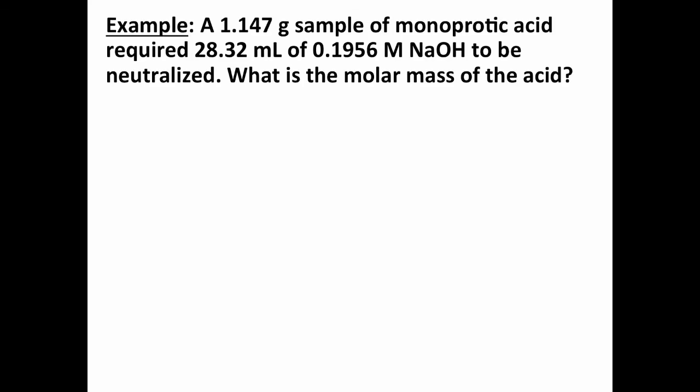Let's do one more example. You might end up doing maybe a lab that's similar to this. We have a sample of a monoprotic acid. That means it has one hydrogen, or one proton, because hydrogen ion is just simply a proton. So it's one hydrogen in the acid, rather than the two hydrogens, like in H2SO4. And it required 28.32 milliliters of a 0.1956 molar sodium hydroxide solution to reach the endpoint. And in this case, we're trying to find the molar mass of the acid, rather than the concentration, because it's just a sample of solid.